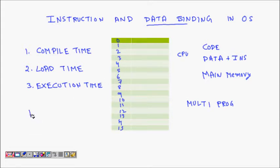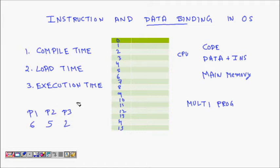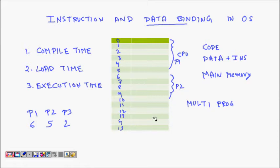Let's say there are programs P1, P2, and P3 in memory. As a trivial example, P1 requires six memory locations, P2 requires five, and P3 requires two. One approach is to allocate contiguous memory locations: give P1 locations 0 to 5, P2 locations 6 to 10, and P3 locations 11 to 15. These programs will all run in parallel in main memory.